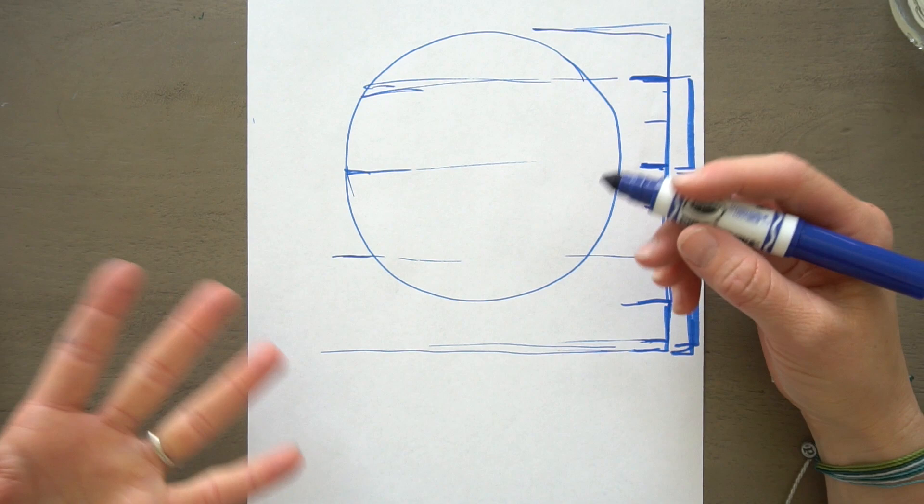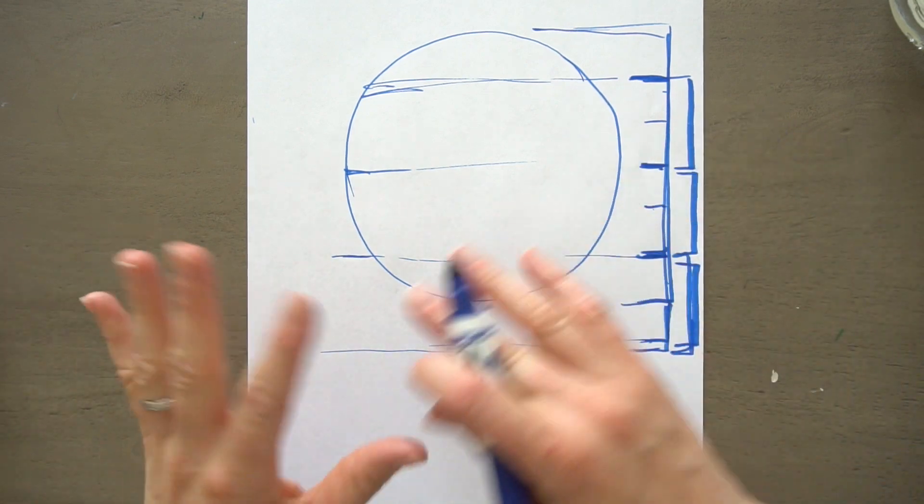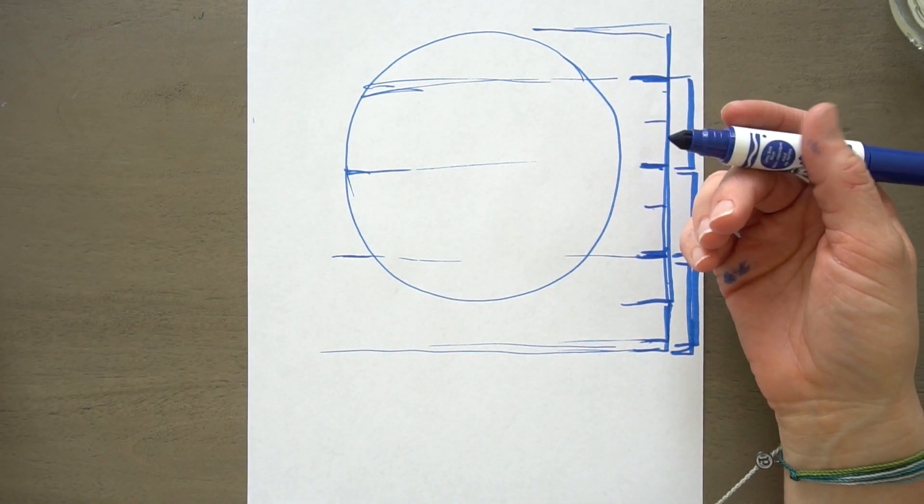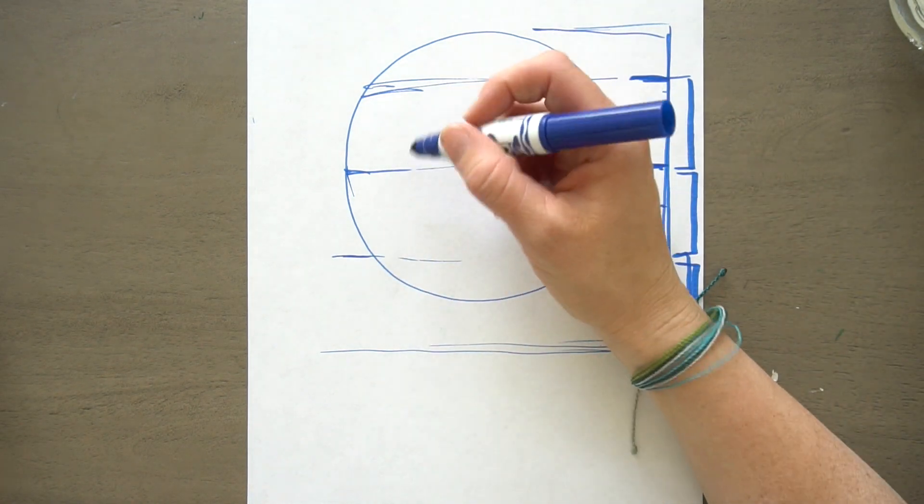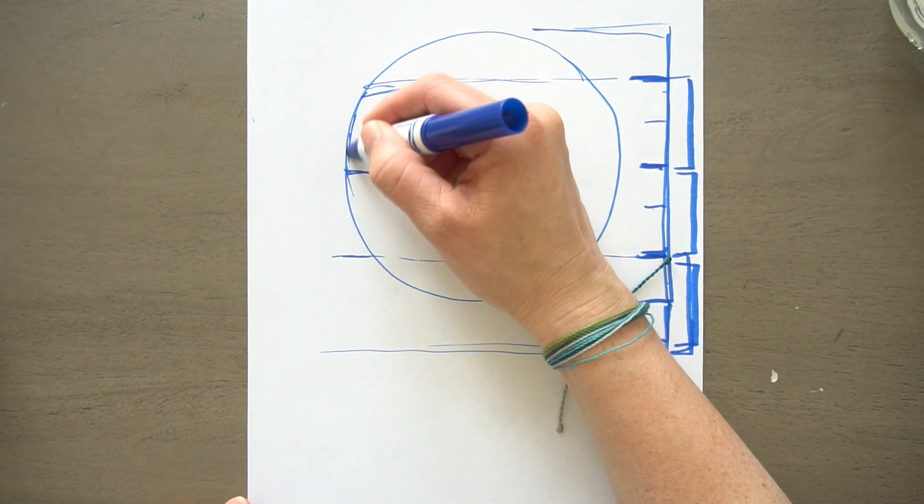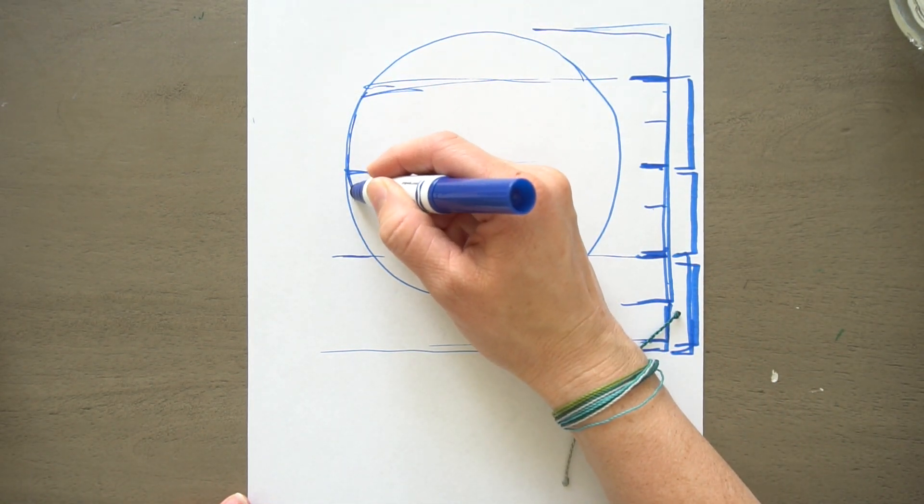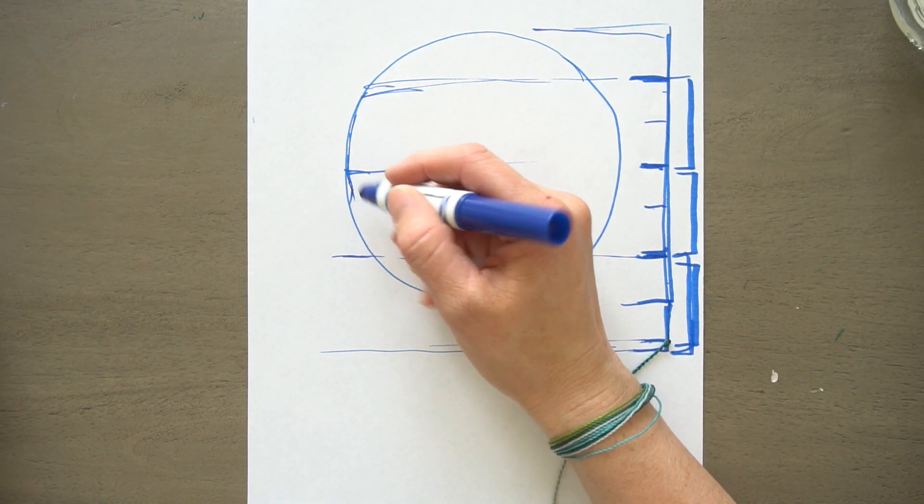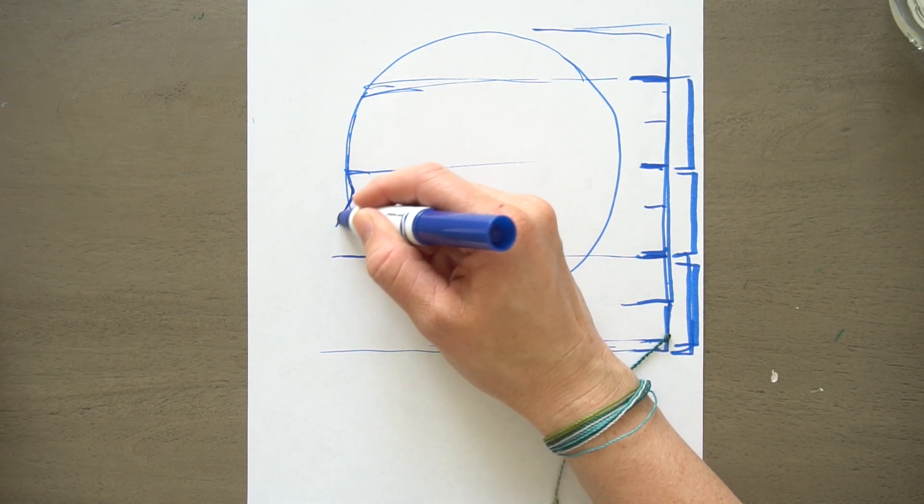And again, this is if you want to draw realistically. If you want to illustrate and draw cartoons, these things are helpful, but you don't have to follow any of these rules. This is just if you're like, I want to learn how to draw people, and like my people never look quite right. That's what this tutorial is for.